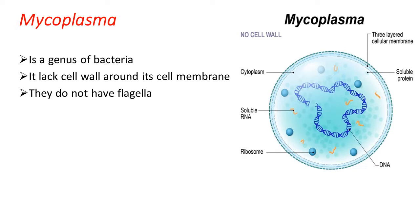Almost all the components inside the cytoplasm are like that of eubacteria — it does not consist of cell organelles like endoplasmic reticulum, Golgi apparatus, or nucleus. The genetic material in mycoplasma is double-stranded circular DNA, and it has 70S type ribosomes, meaning the cell type is prokaryotic.